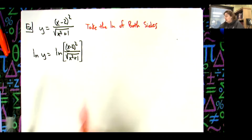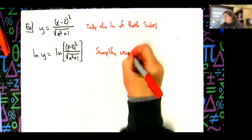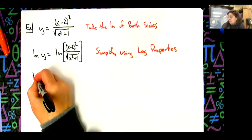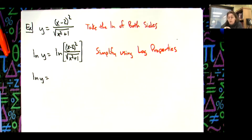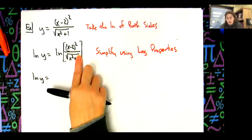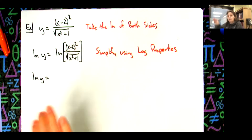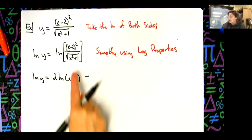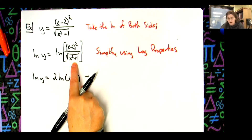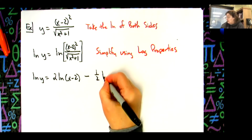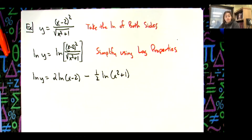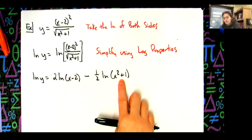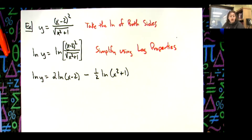Step two: simplify using log properties. The left-hand side stays as natural log of y. On the right, I see division so I get subtraction. The numerator is raised to the second power so I can bring that exponent down — 2 times natural log of (x minus 2). The denominator has an exponent of one half, so minus one half times natural log of (x squared plus 1). Now taking derivatives of those is really easy — that's the whole point.